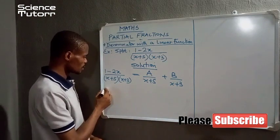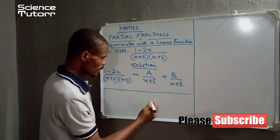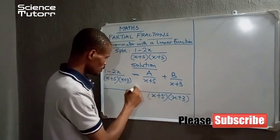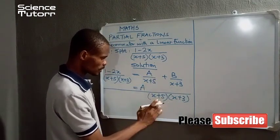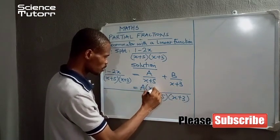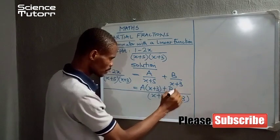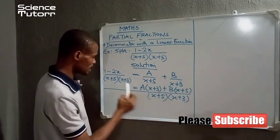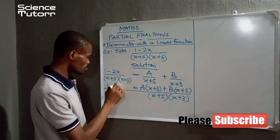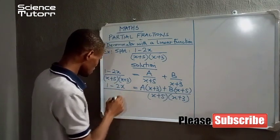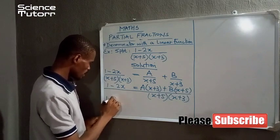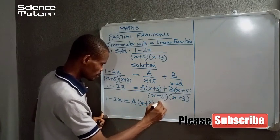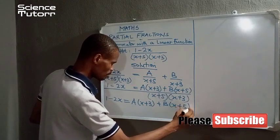So how do we go about it? We take LCM. LCM for A and B, we have (x+5), (x+3). So we have A into (x+3) plus B into (x+5). On the left hand side, these two terms are the same, so they simply cancel out leaving us with 1 minus 2x. So we have 1 minus 2x to be equal to A(x+3) plus B(x+5).